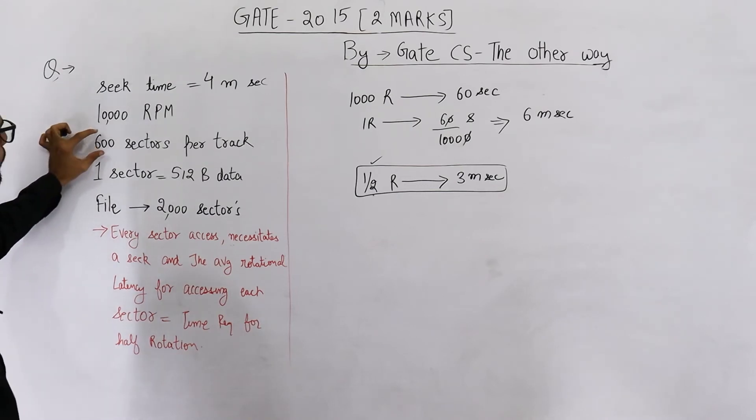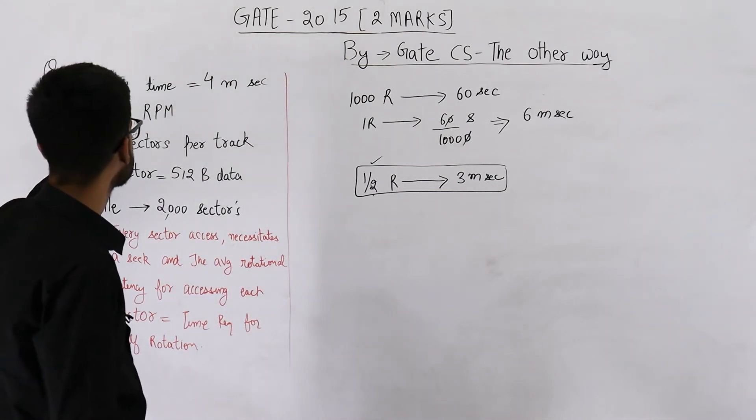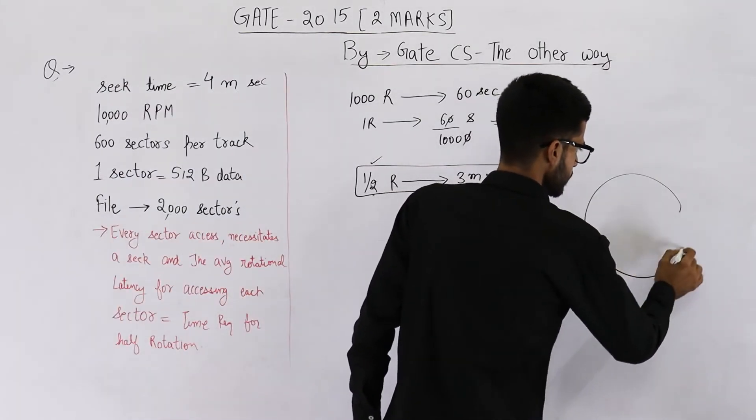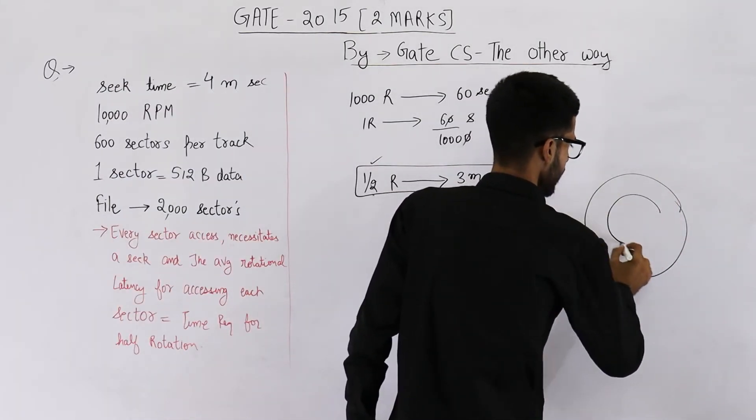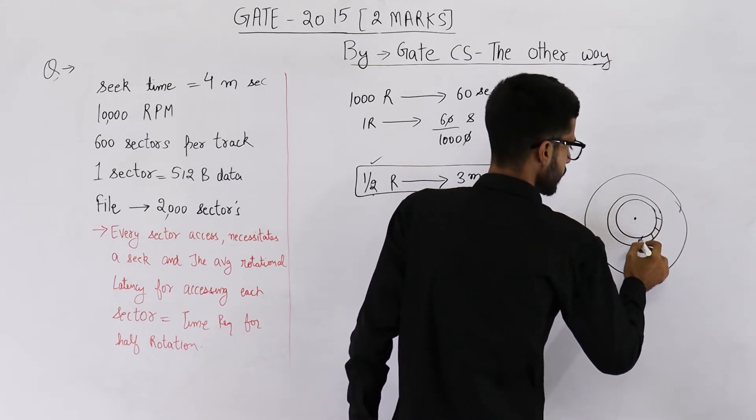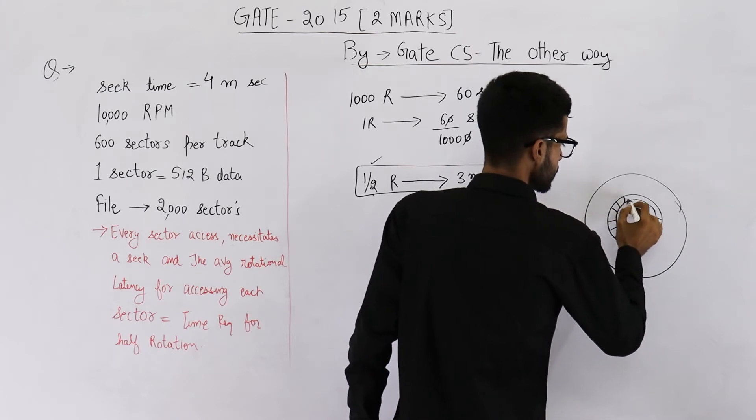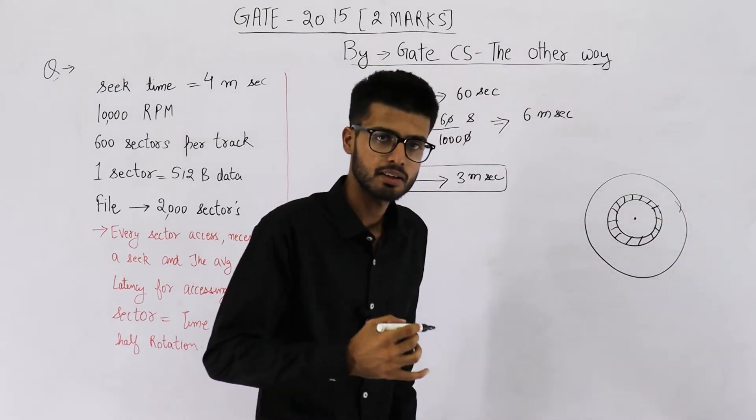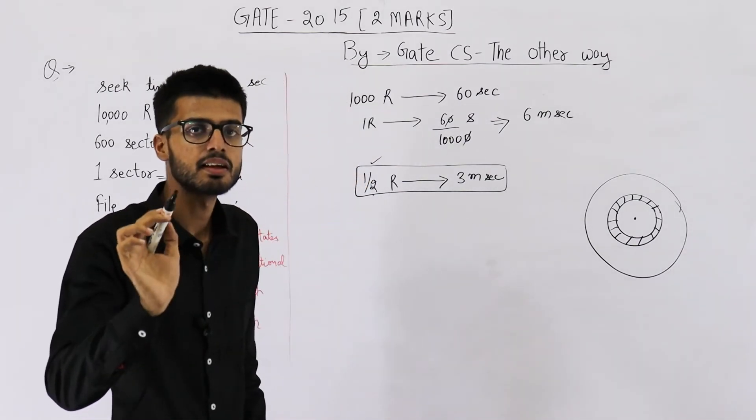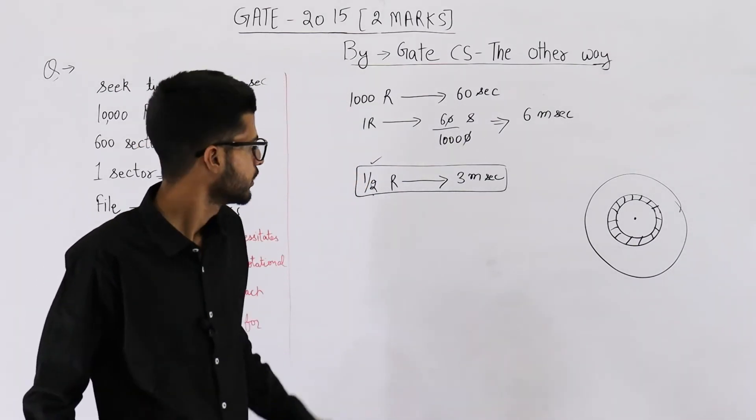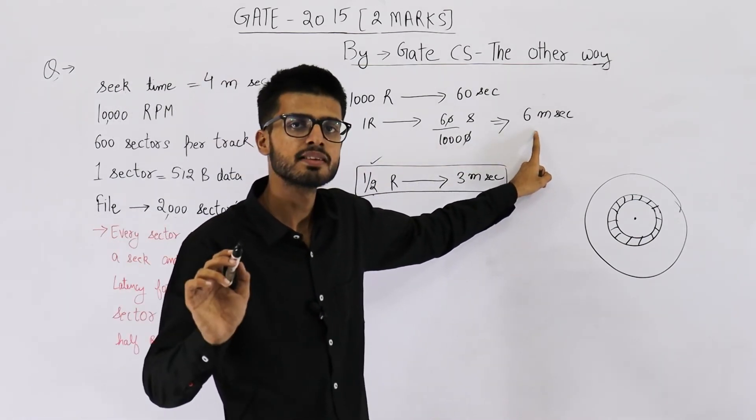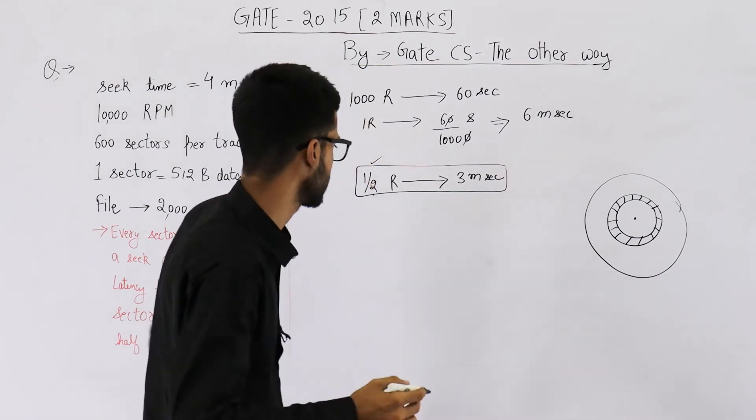They are saying one track has 600 sectors. That means, say this is your platter and this is some track, if you rotate the entire disk once, 600 sectors could be accessed. So in one rotation, that means 6 milliseconds, you could access 600 sectors.